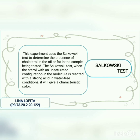Salkowski test discussion: This experiment uses the Salkowski test to determine the presence of cholesterol in oil or fat in the sample. The Salkowski test works when a sterol with an unsaturated configuration in the oil is reacted with a strong acid under water-free conditions, and it will give a characteristic color.